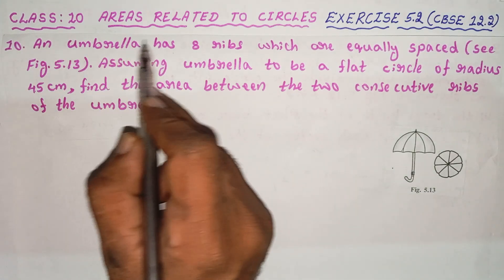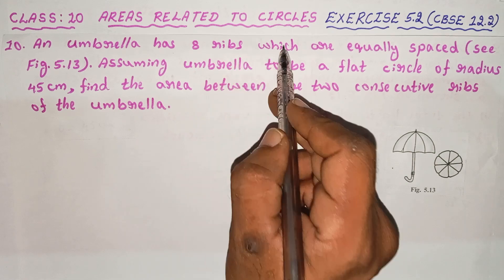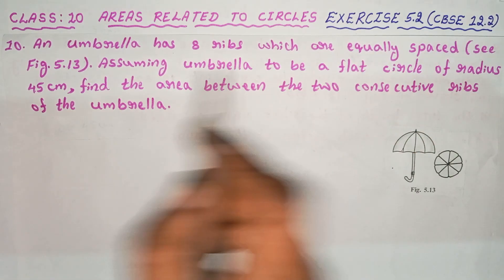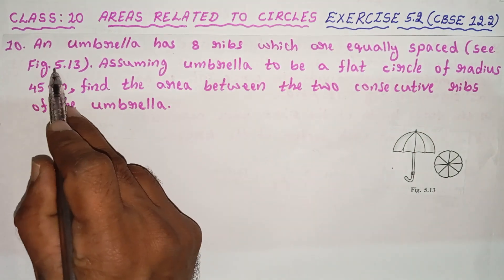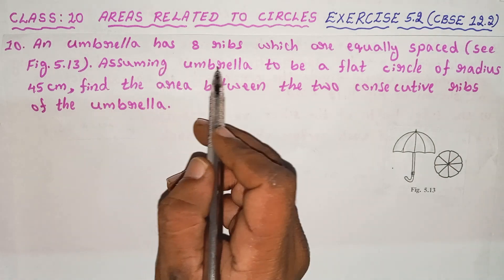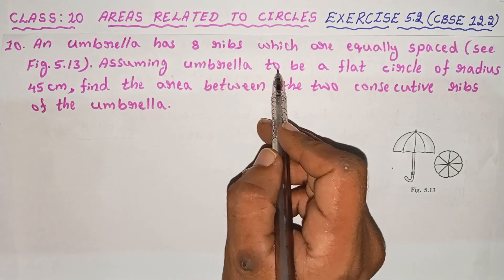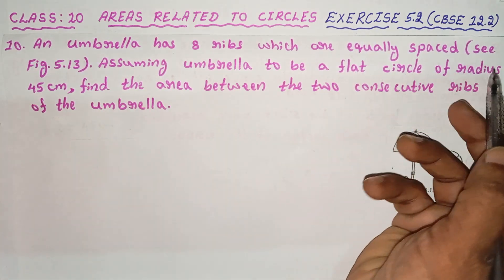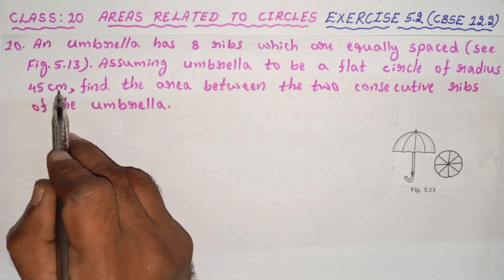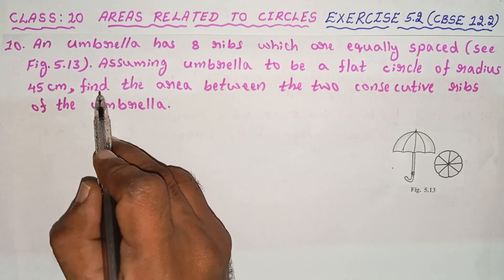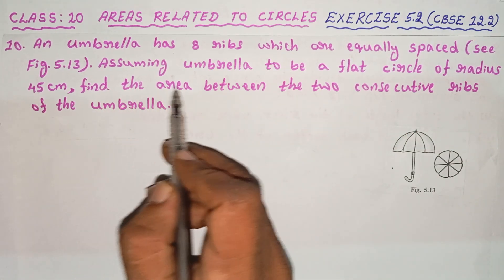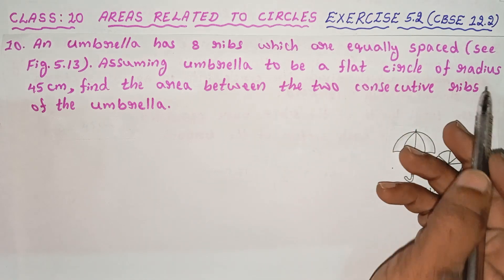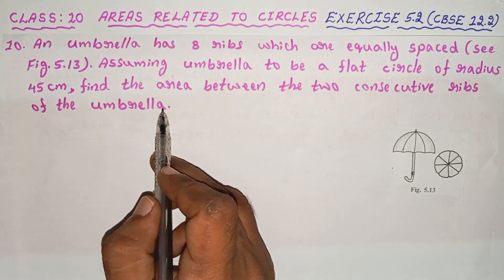An umbrella has 8 ribs which are equally spaced. See figure 5.13. Assuming the umbrella to be a flat circle of radius 45 cm, find the area between the two consecutive ribs of the umbrella.